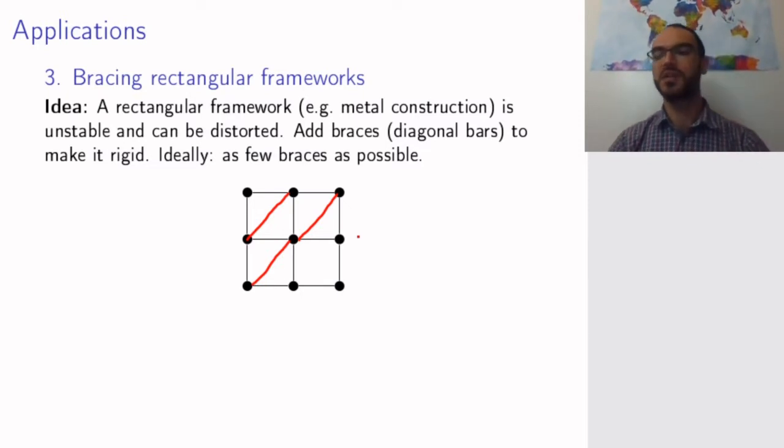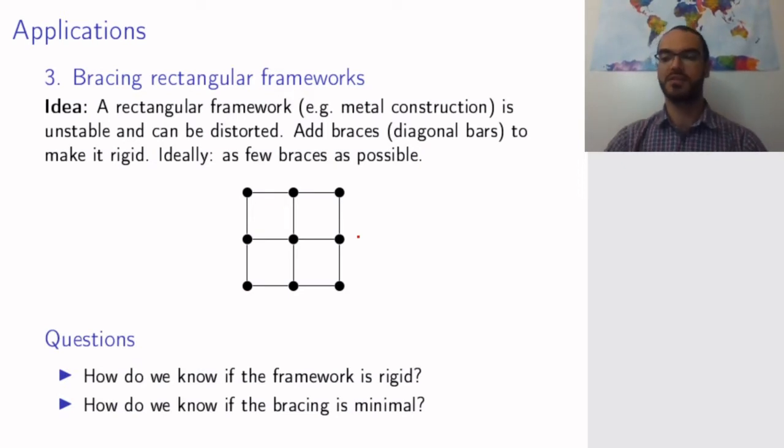So how do you determine when a metal construction is rigid and how do you find the minimal possible bracing? A bracing is this operation of adding diagonal bars. These are the questions we want to solve. Just a small remark: for the purpose of this application it doesn't matter if I add the diagonal one way or the other. Adding any diagonal to one square will make sure that this square stays rigid.